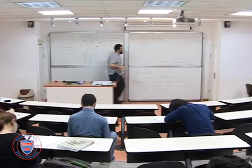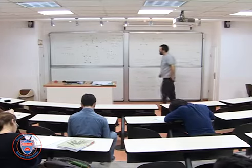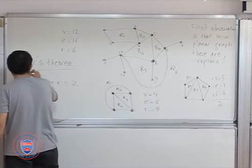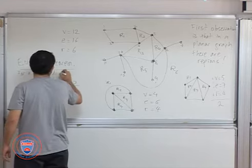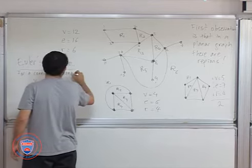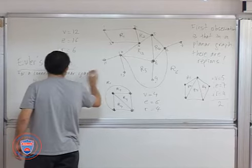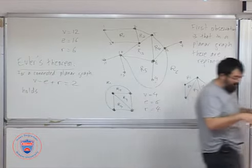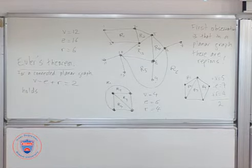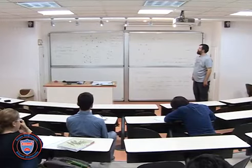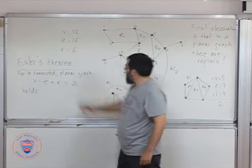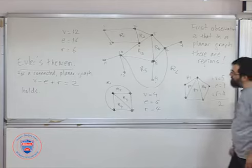The only condition you need is that this is connected. So for a connected planar graph, V minus E plus R equals 2. This holds. It has to be connected because this holds in every connected component. So if you have more than one component, the number changes.